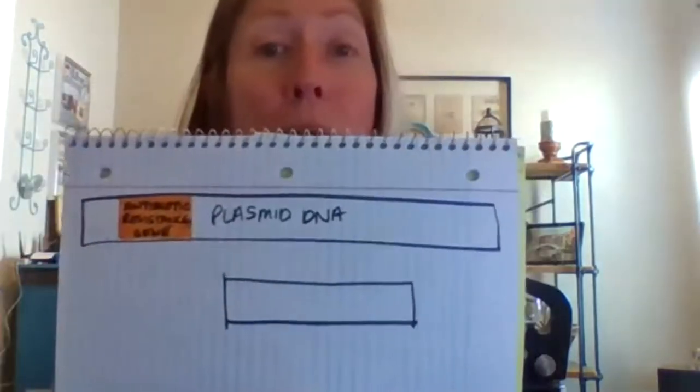Next, I'm going to draw another section of DNA to represent my viral DNA — the gene from the virus. It can be shorter, and I'll color it a different color so that it stands out at the later stages of this activity. I'll label it 'V DNA.'